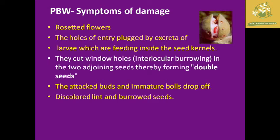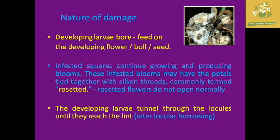The pink boll worm is the most important pest we must remember in cotton because it is the only exclusive pest of cotton. It produces a rosette flower symptom. Entry holes with excreta of larvae are found inside bolls. Attacked and immature bolls easily dry off, with discolored lint and damaged seeds found inside the bolls.